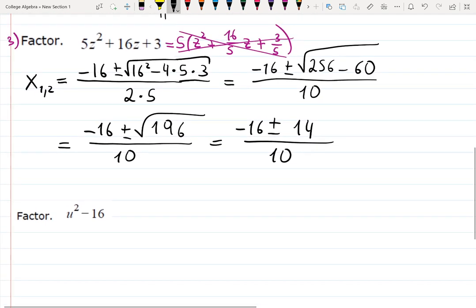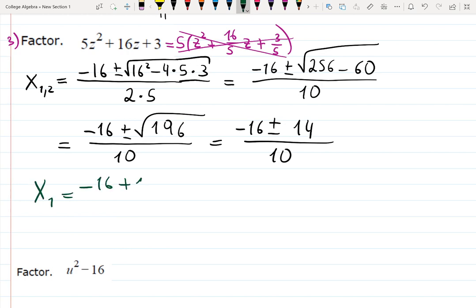In this moment, I usually stop, and I will write down separately two roots. Root 1 is minus 16 plus 14 over 10, or it doesn't matter which one you do first, minus or plus. Minus 16 minus 14 over 10. Again, that's my notation, you don't have to follow it, I just like it this way.